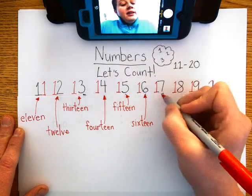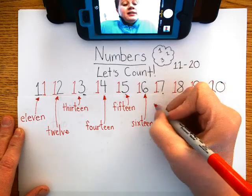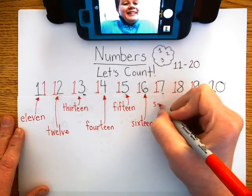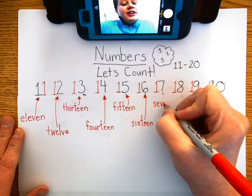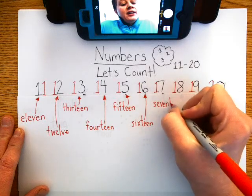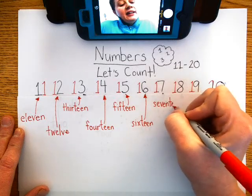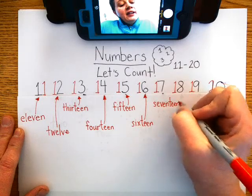Then we have 17, S, E, V, E, N, T, E, E, N.